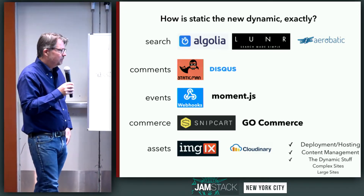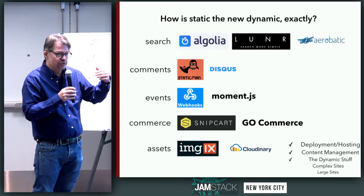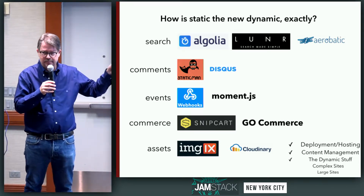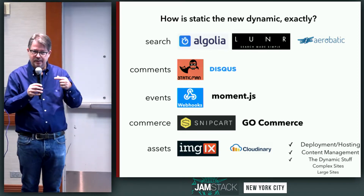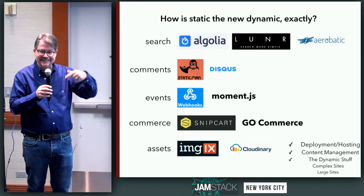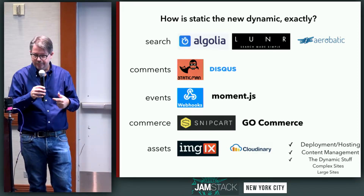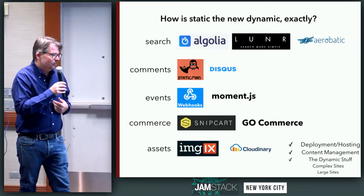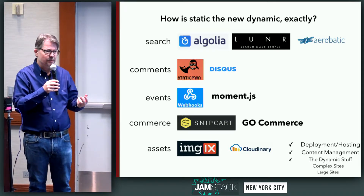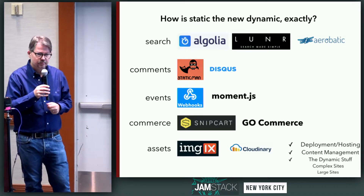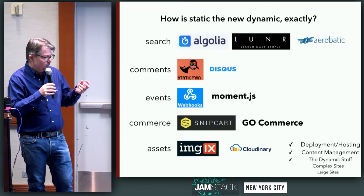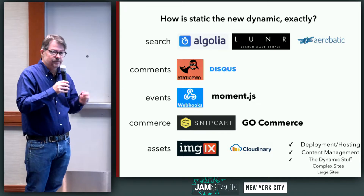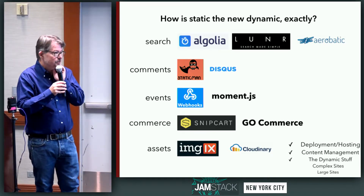Things like comments — that's always been a problem, but we've always used stuff like Disqus. There is also an open source solution called Staticman, where you can actually integrate user-generated content into your site — they do a pull request that you pull into your site. Things like events are very easily done. I tend to do them as part of my content built into the site and then just use webhooks to build the site periodically to keep it up to date. If you had fast-changing events, you might just use a JavaScript solution based on MomentJS.